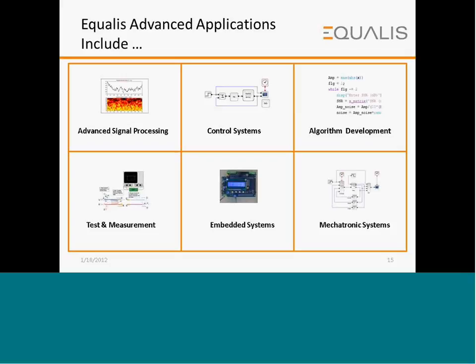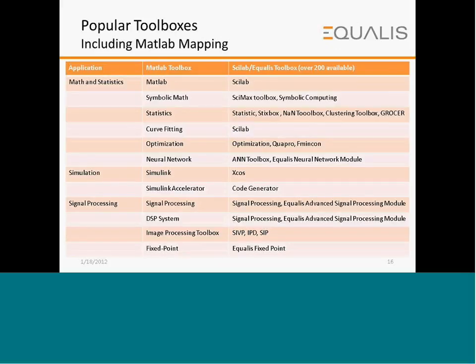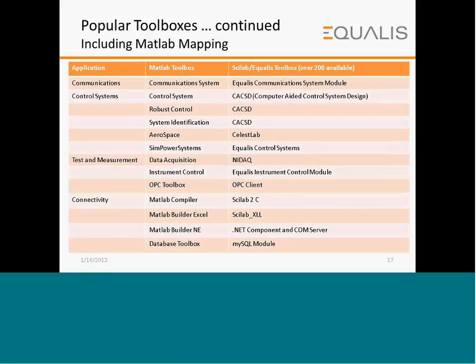Equalist advanced applications include advanced signal processing, control systems, algorithm development, test and measurement, embedded systems, and mechatronic systems. Compared to MATLAB toolboxes, SciLab has over 200 available toolboxes with equally comparative modules for math and statistics, simulation, signal processing, communication, control systems, test and measurement, and connectivity.